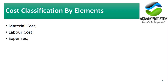Cost classification by elements divides cost into three areas: material cost — the raw material used to produce a product; labor cost — the cost of workers involved in production; and other expenses — costs incurred during production such as electricity, heating, and rent.